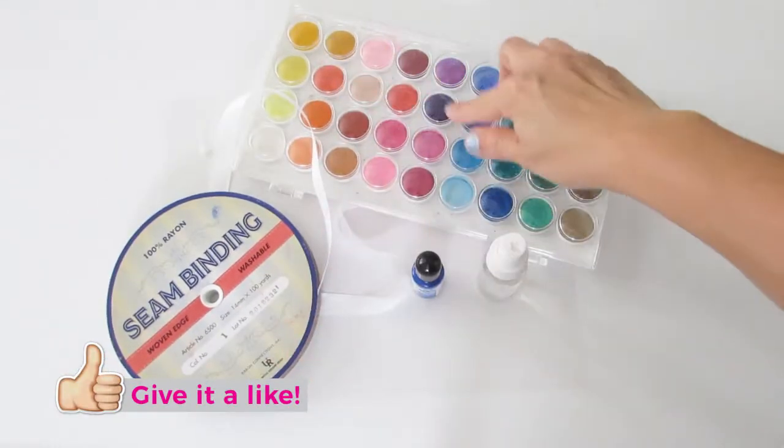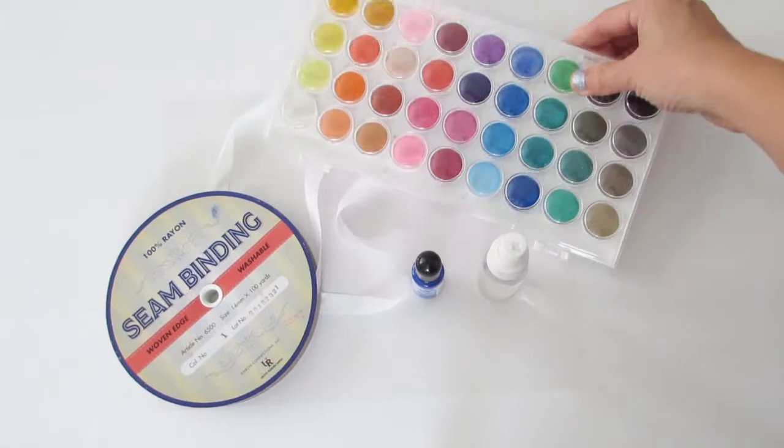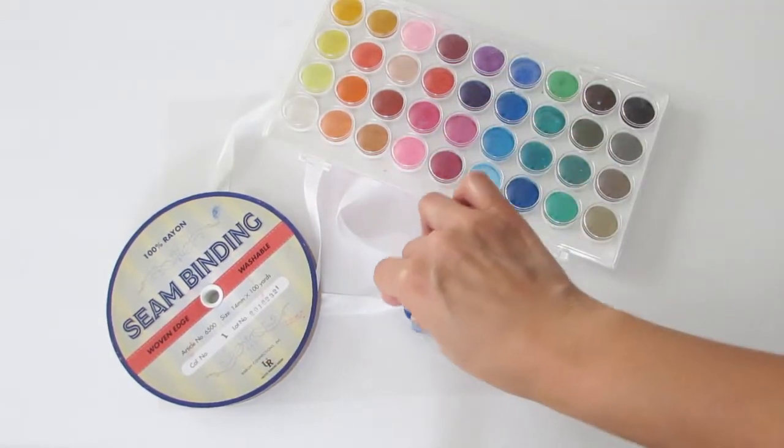I'm going to show you how easy it is to create these beautiful tassels with seam binding, watercolors, alcohol ink, and a spray bottle with water. So let's get started.